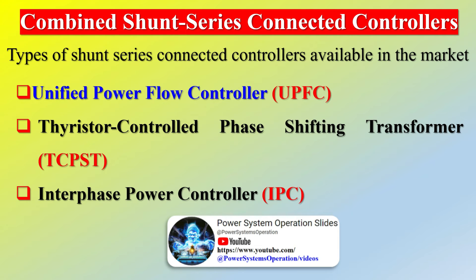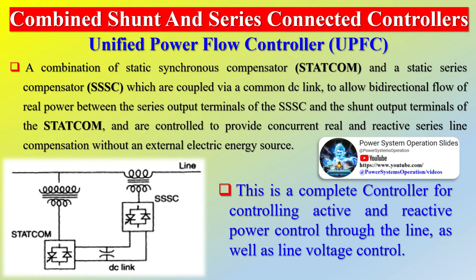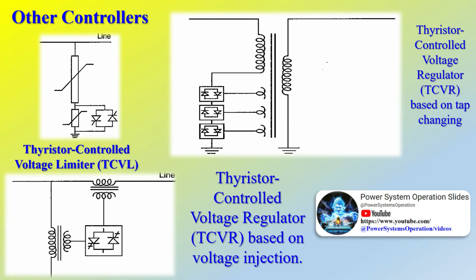Regarding the choice of controller: a series controller controls current and power flow by controlling the driving voltage. To control current/power flow and damp oscillations, a series controller is several times more powerful than a shunt controller. A shunt controller injects current into the line and is used for more effective voltage control and damping voltage oscillations. Injecting voltage in series with the line can improve the voltage profile, but the shunt controller is more effective at improving the voltage profile at the substation bus. For a given MVA, the series controller is smaller than the shunt controller. Shunt controllers cannot control power flow in the lines, while series controllers must bypass short-circuit currents and handle dynamic overloads.